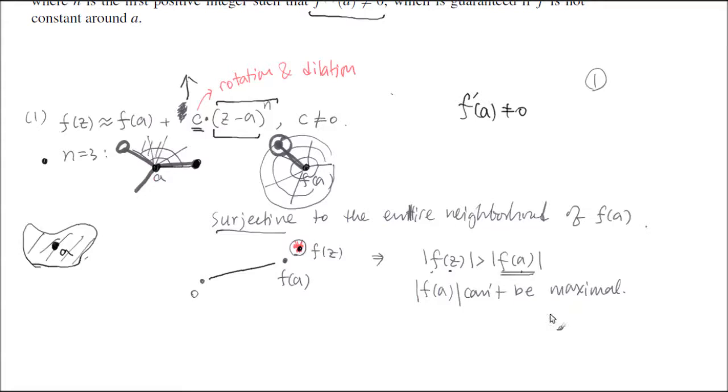You can't have that, right? It must be outside, unless the function is constant. So that's your conclusion. If you find it inside the maximal value, then you conclude that the function is actually constant.